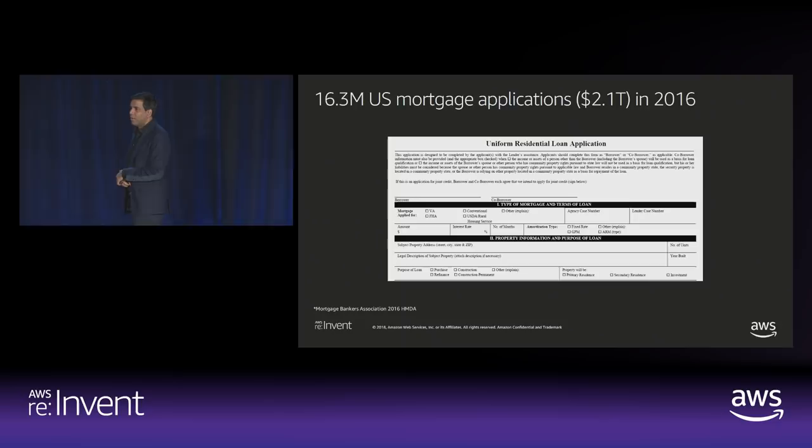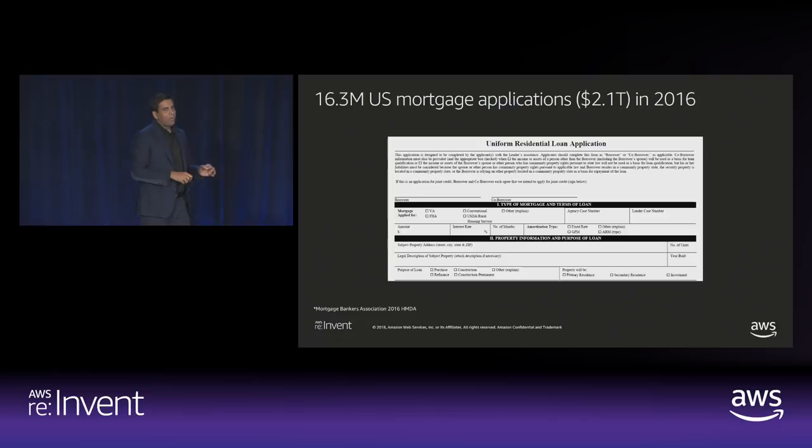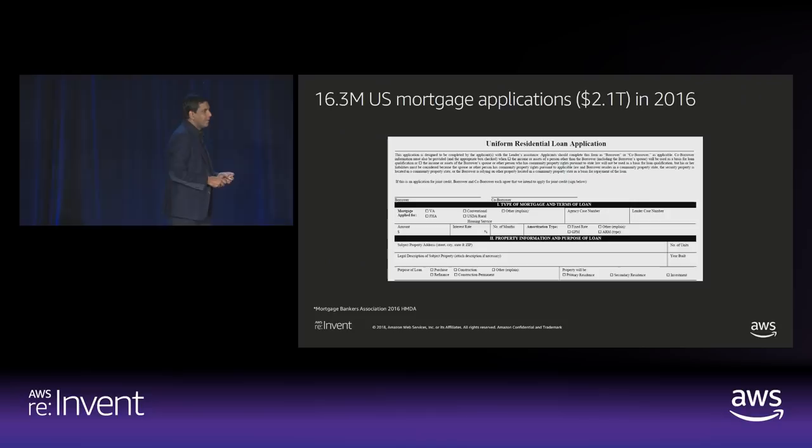Let's introduce a specific example. This is a uniform residential loan application — what you'd fill out to get a loan. In 2016, about 16.3 million such documents were processed in the US alone, representing a total of about 2.1 trillion dollars of business. So this is clearly a very important document.